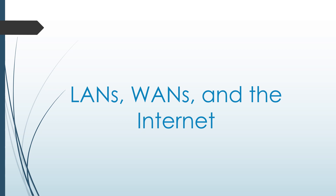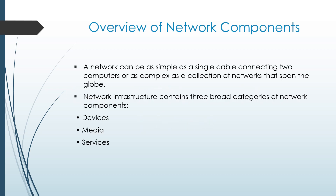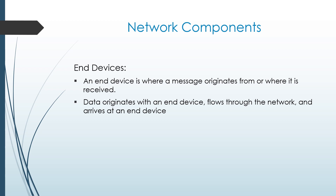Now we go to the types of networks: LANs, WANs, and the internet. A computer network can be as simple as a single cable connecting two computers, or as complex as a collection of networks that span the globe. Network infrastructure contains three broad categories of network components: devices, media, and services. An end device is where a message originates from or where it is received. Data originates with an end device, flows through the network, and arrives at an end device.